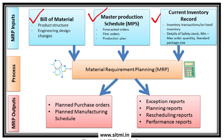The two major outputs are: one, a plan for purchase orders, and second, a plan for manufacturing orders. On top of that, MRP also gives exception reports or planning reports, which talk about if there is any exception in the sequence of production — what we have to prepone or postpone in terms of orders — helping to make sure we are on track with the plans. MRP also gives output in the form of multiple planning or performance reports for the purchasing team or the production team.